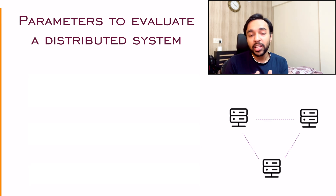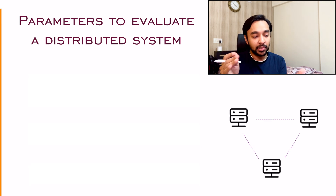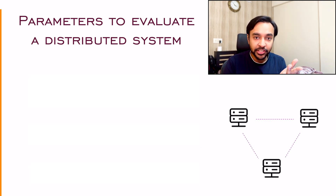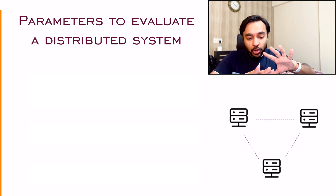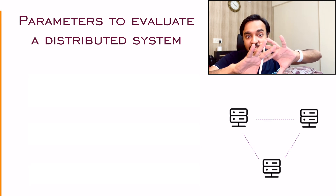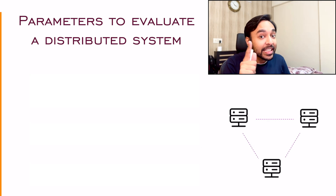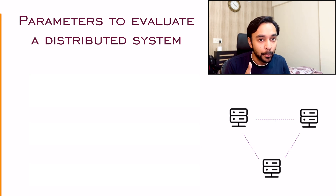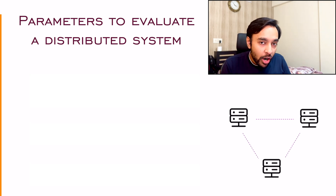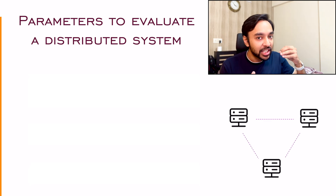You can think about any big system like Netflix or Facebook. They have data centers all throughout the world, but they behave as only one system. Now, when you have such a big system, you have certain parameters.